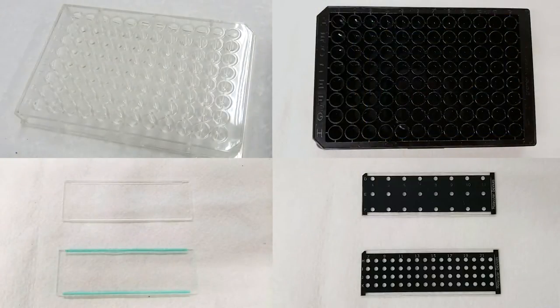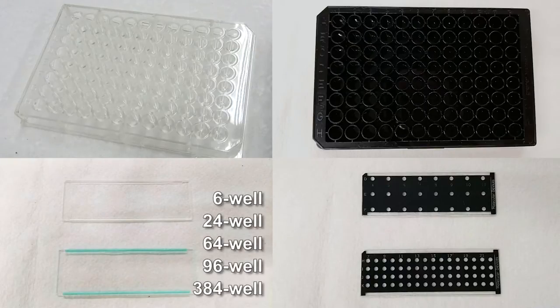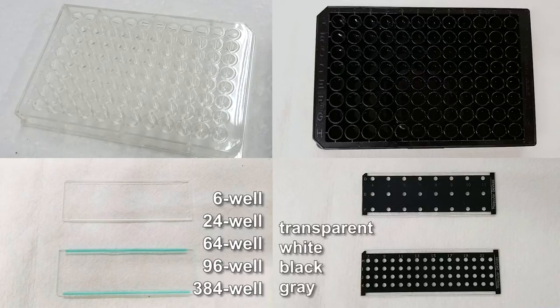The microplates have different formats of 6-well, 24-well, 64-well, 96-well or 384-well along with options of transparent, white, black or grey wall and bottom.